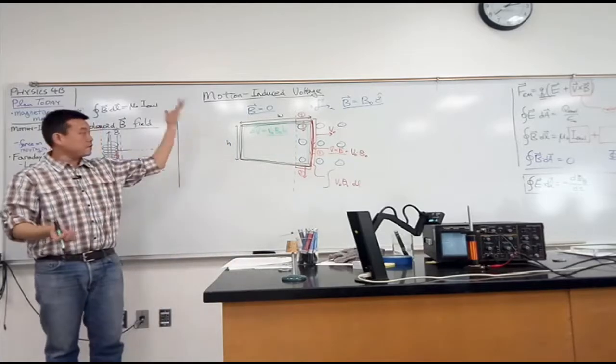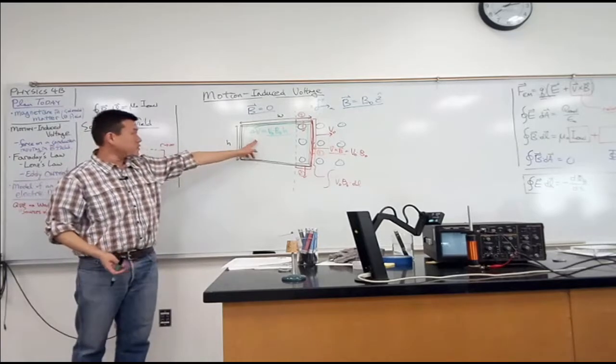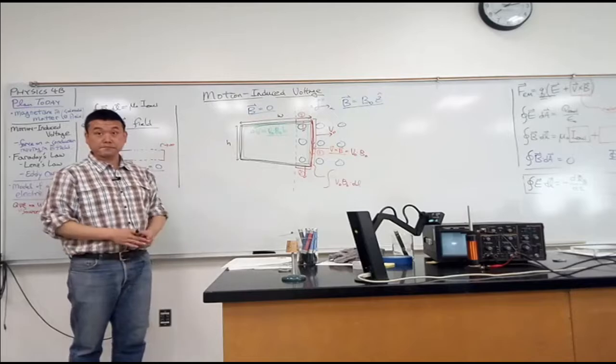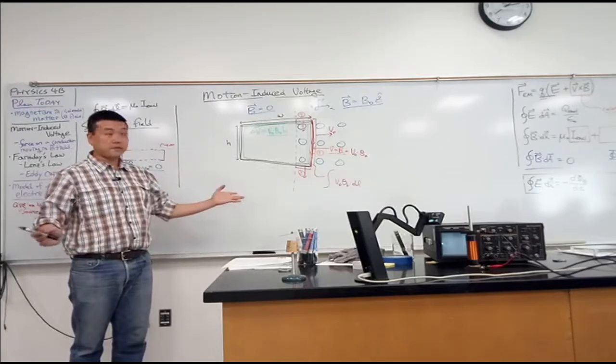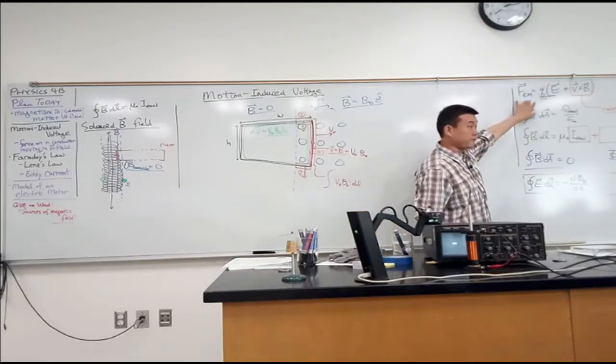So all I have to give you now is what is the resistance of the wire, then take the voltage, divide by the resistance, that will give you the current. That's the result. So that's just using this concept of motion-induced voltage.